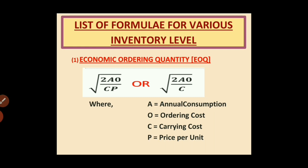Formula number one: Economic Ordering Quantity (EOQ). Let us revise — EOQ means it is the minimum quantity of material for which any person must place the order. You cannot place an order for less than this quantity. Suppose EOQ is 100 kg, then you cannot place an order for less than 100 kg. There are two formulas: number one, under root 2AO upon CP, and number two, under root 2AO upon C.